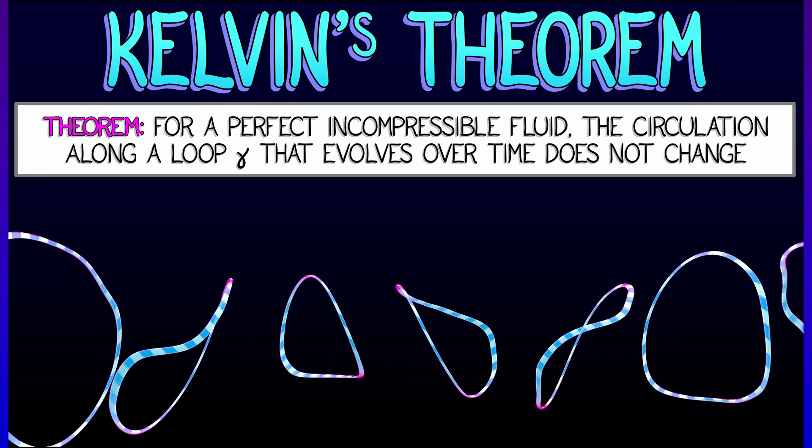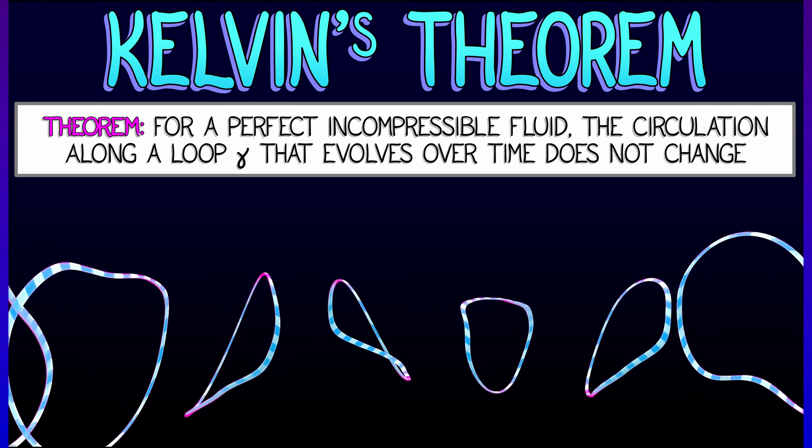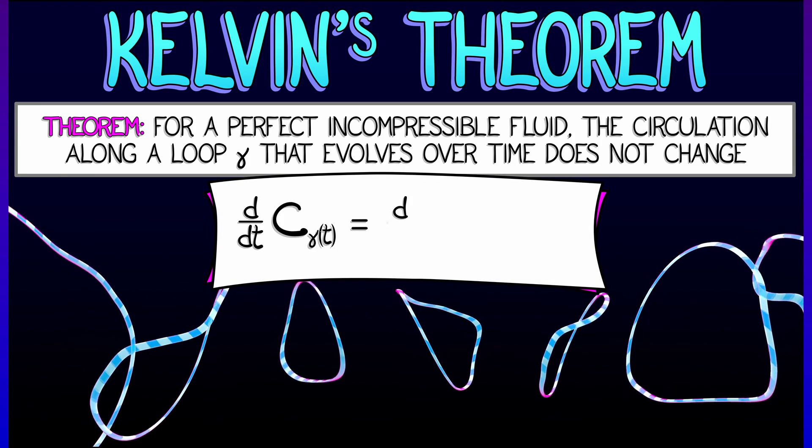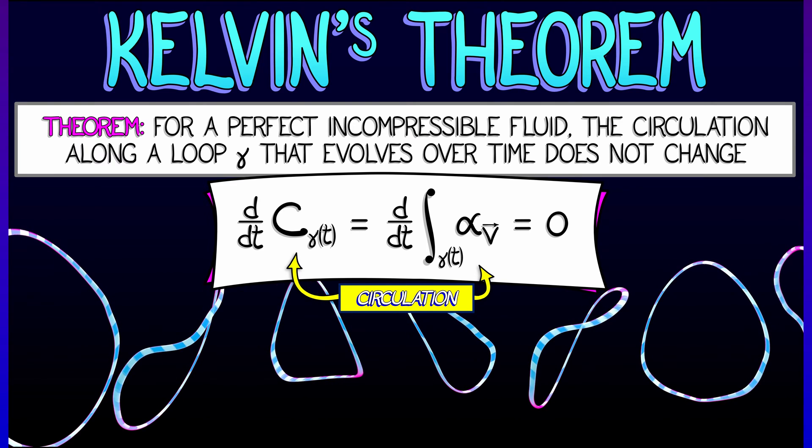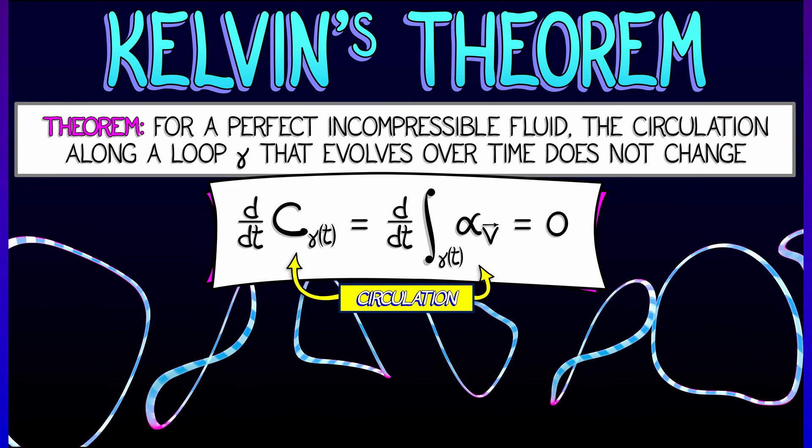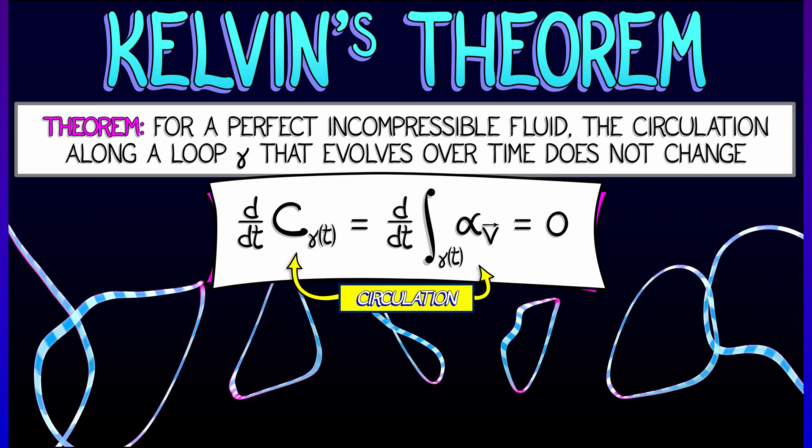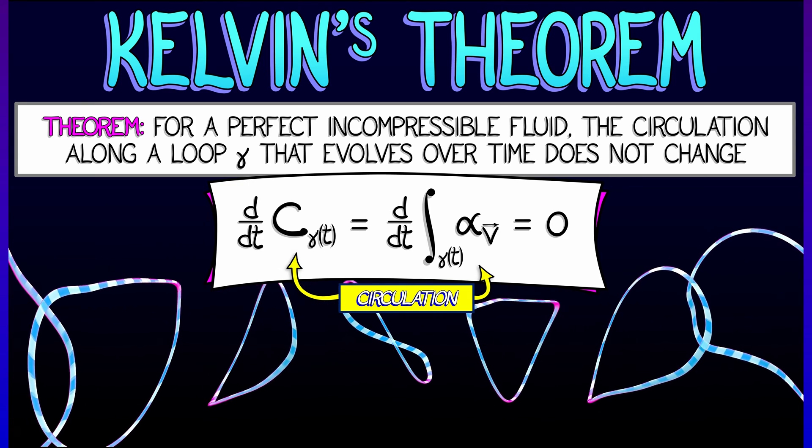Let's think about what that means. The circulation c sub gamma is going to depend on t. If I take the derivative of that with respect to t, I get zero. The circulation is constant. That's what Kelvin's theorem says.